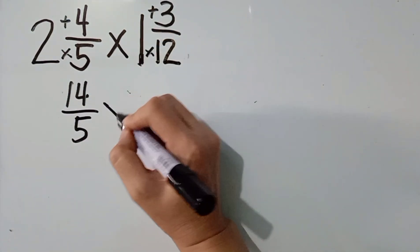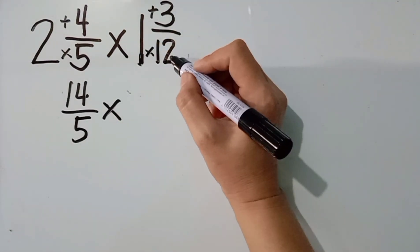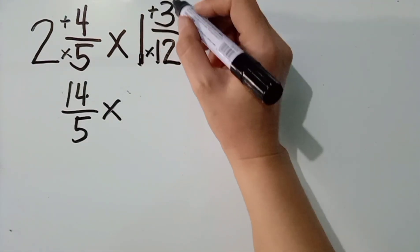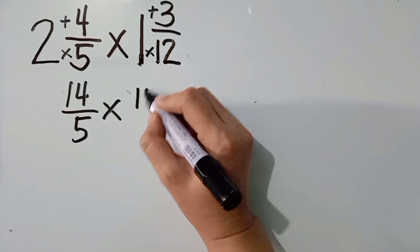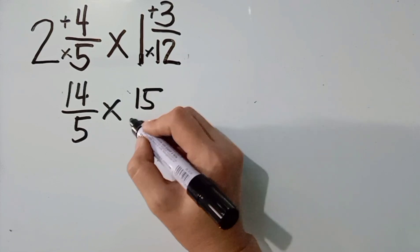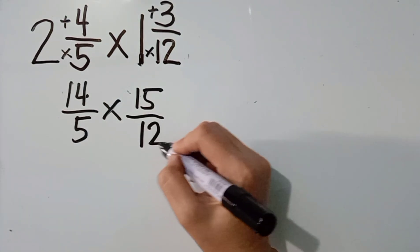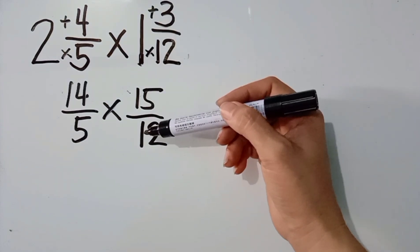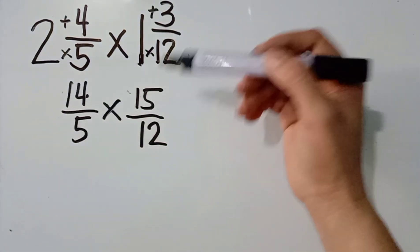Copy the operation. Then, 12 times 1 is 12 plus 3, the answer is 15 over 12. Ayan na po siya. Ang ating mixed number naging improper fraction na.